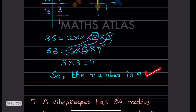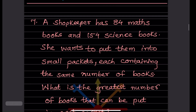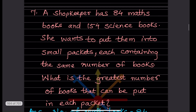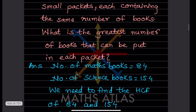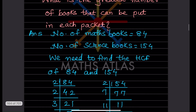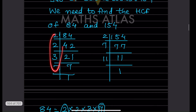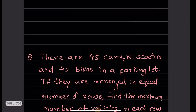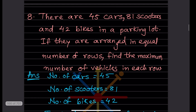Problem: a shopkeeper has 84 maths books and 154 science books. She wants to put them into packets each containing the same number of books. What is the greatest number of books in each packet? Find the HCF of 84 and 154. The common prime factors give 2 × 7 = 14. So the shopkeeper can put 14 books in each packet.